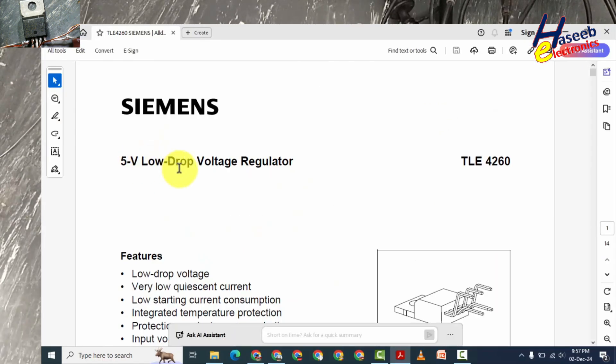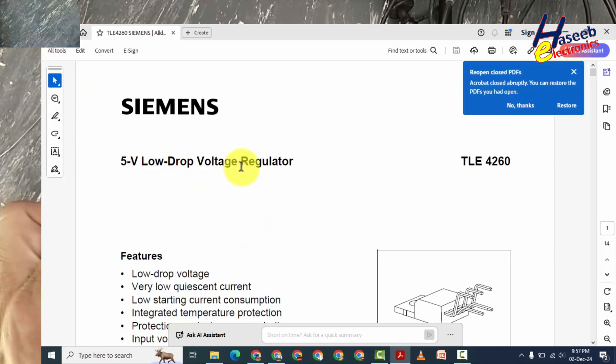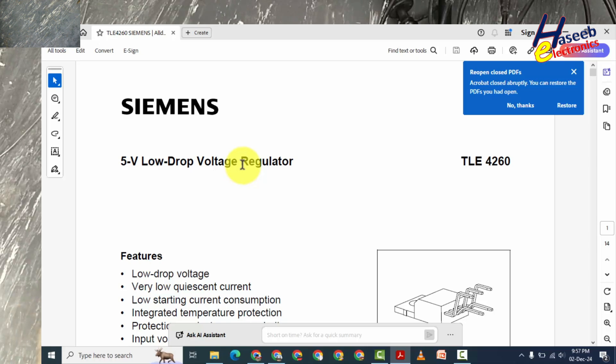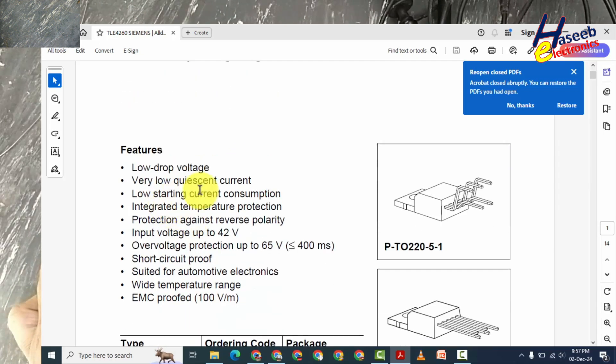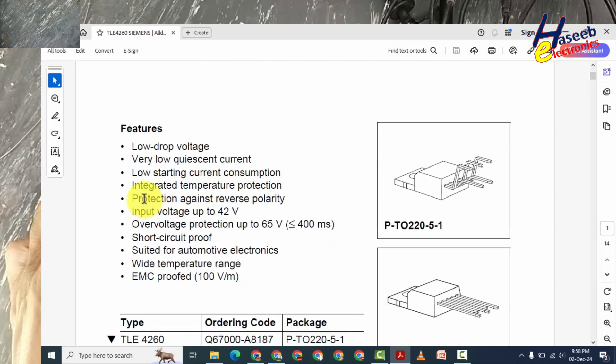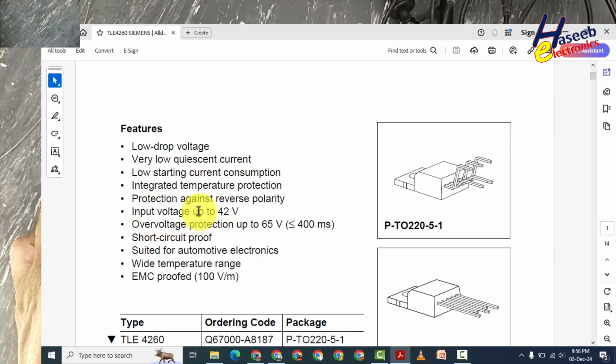5-volt low drop voltage regulator. It is a linear regulator but its drop voltage is very low. Very low quiescent current, integrated temperature protection, reverse polarity protection, input voltage up to 42 volts, over voltage protection up to 65 volts.